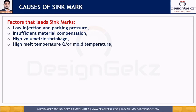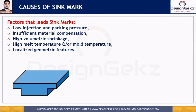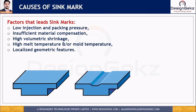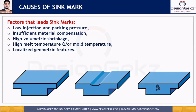Sink marks also occur due to high melt temperature or mold temperature, and due to localized geometric features like ribs, bosses, or internal radius areas if they are not designed per standard DFM guidelines. That shrinkage pulls the part geometry inward, causing depressions or sink marks. If the surface layer is hard enough or if there is proper cooling for the surface, instead of sink marks you may get a vacuum void. So this is the distinction between a sink mark and a void.